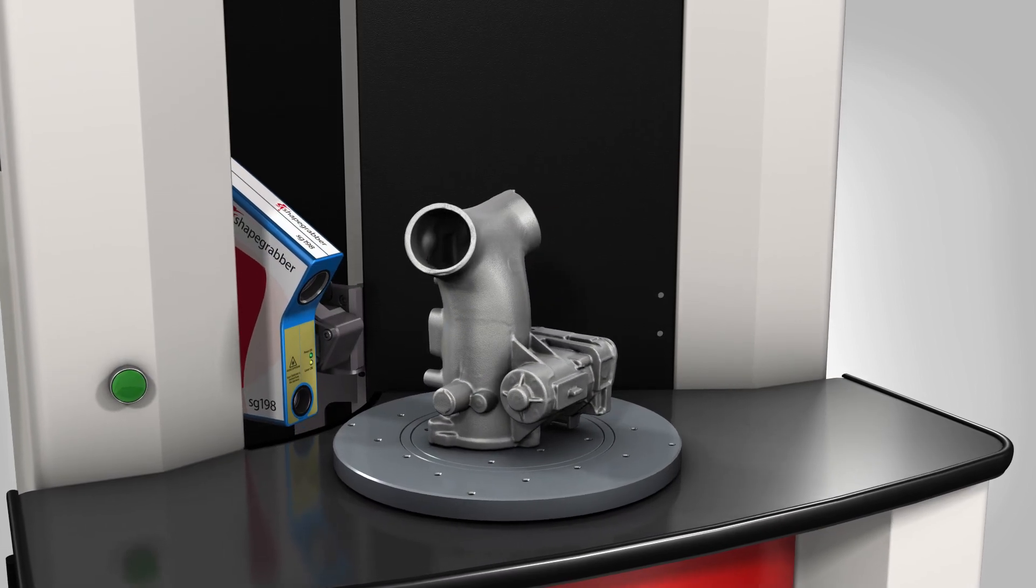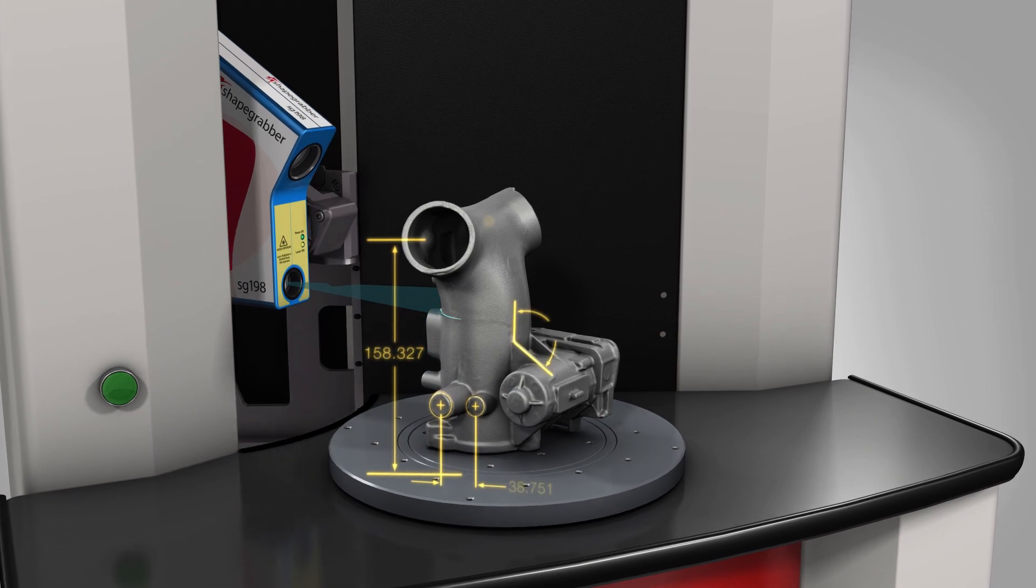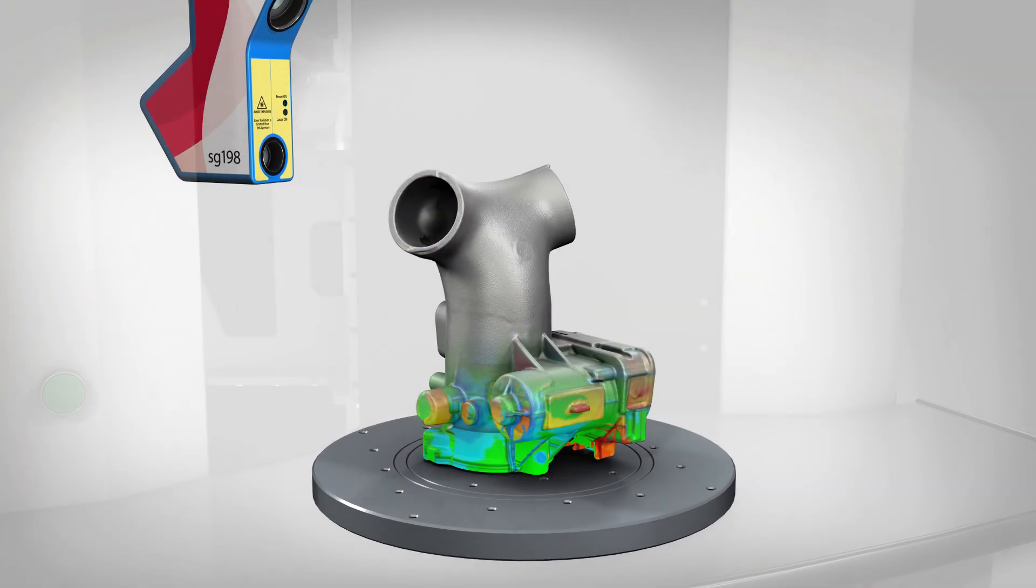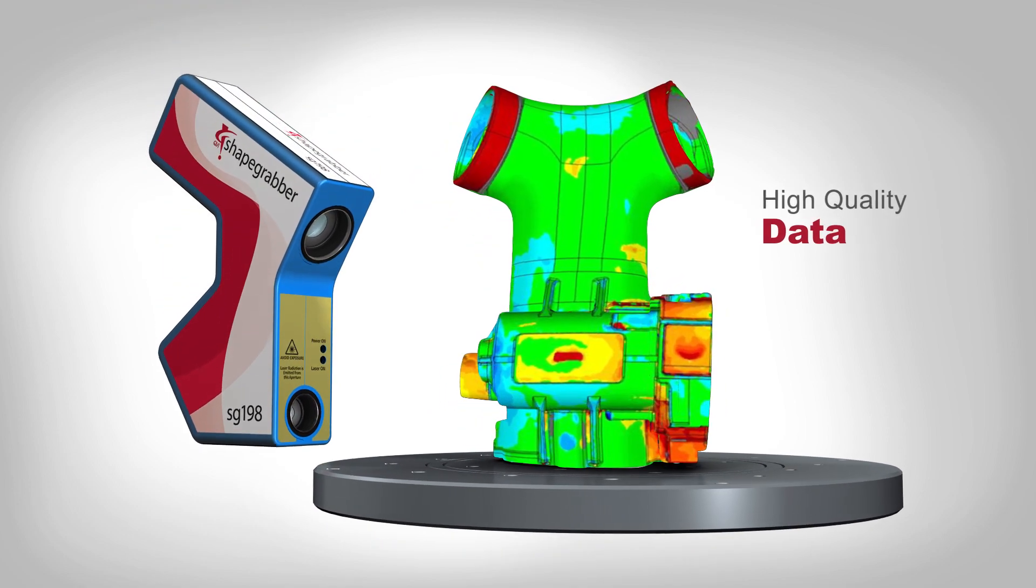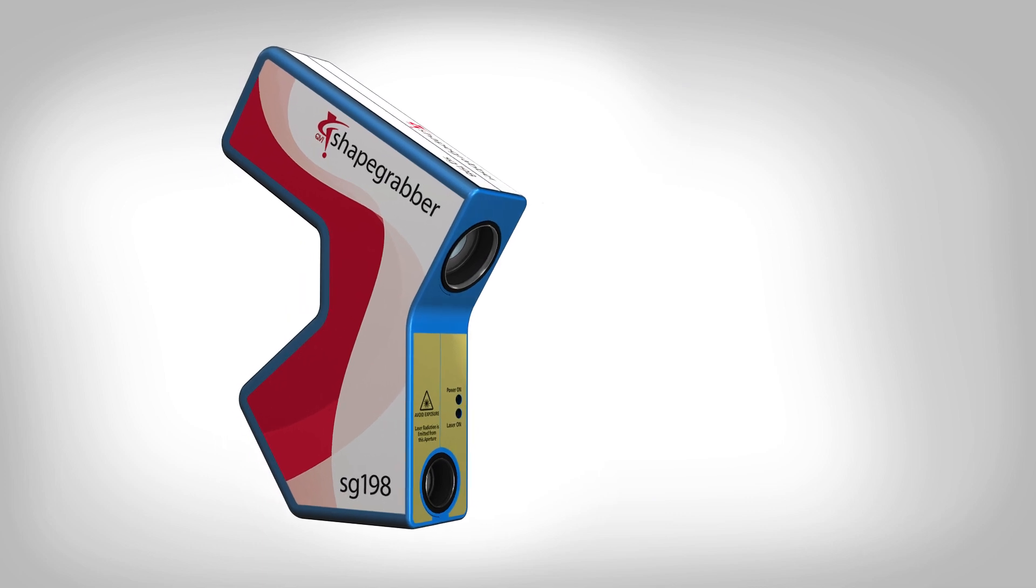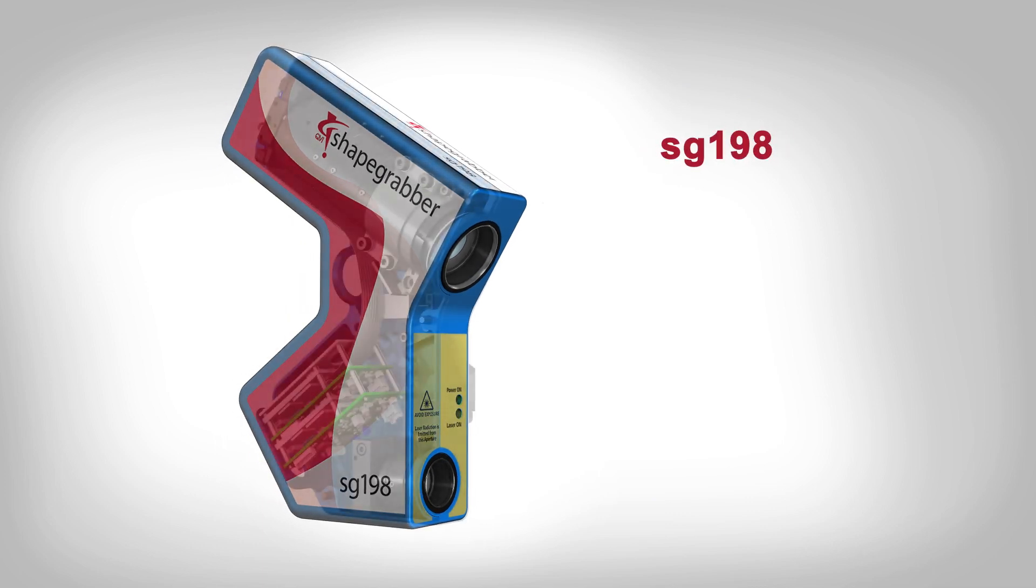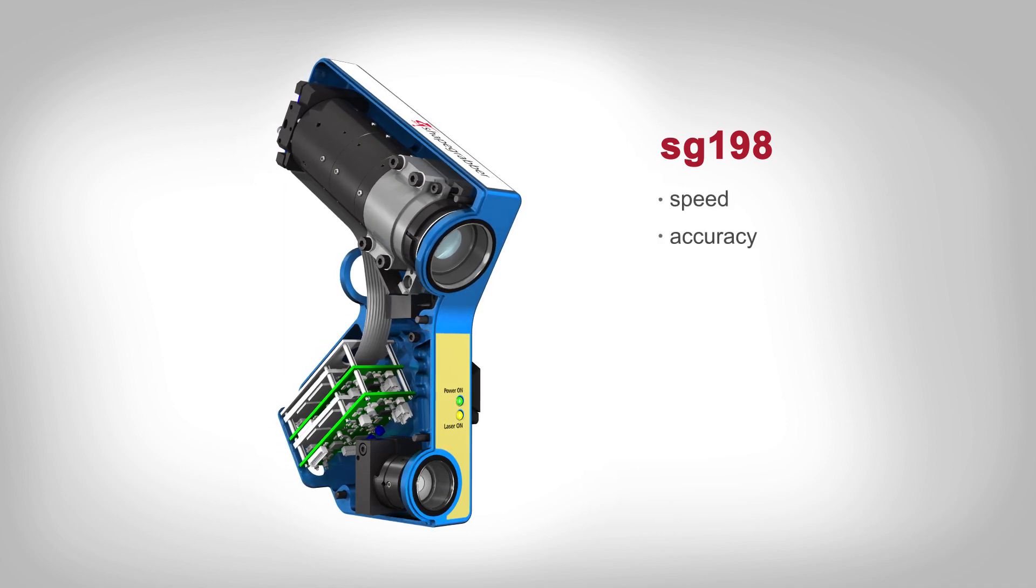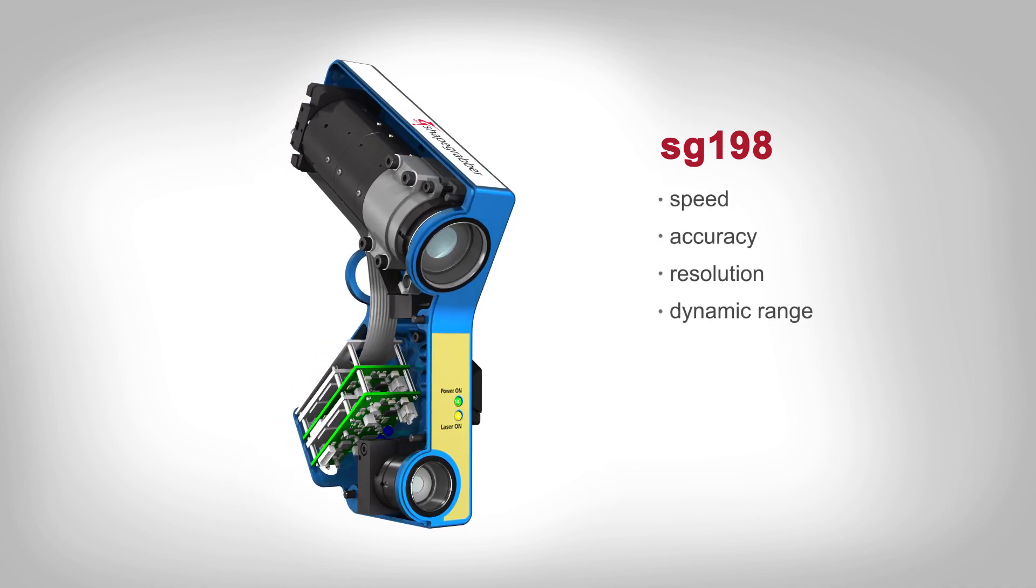All aspects of the AI620 are carefully engineered to ensure highly accurate measurements. At the heart of the AI620 is the new SG198, the latest generation of ShapeGrabber laser scan heads offering exceptional speed, accuracy, resolution and dynamic range.